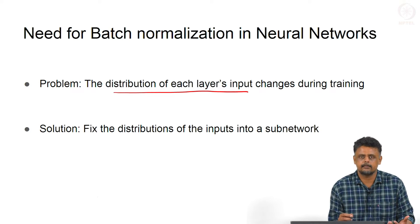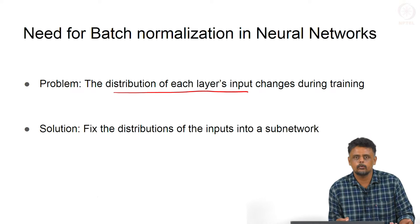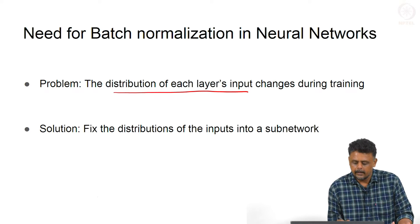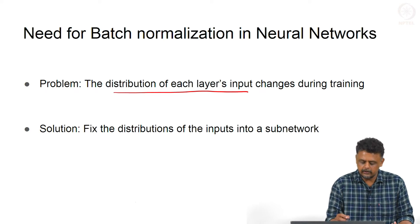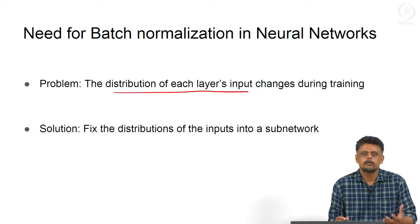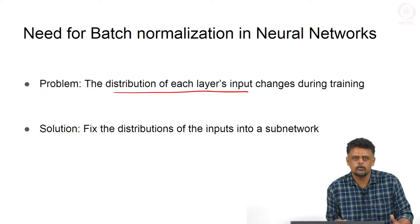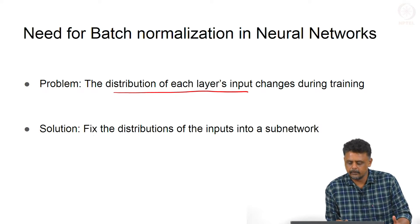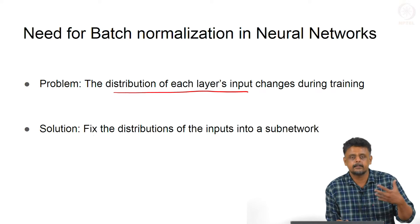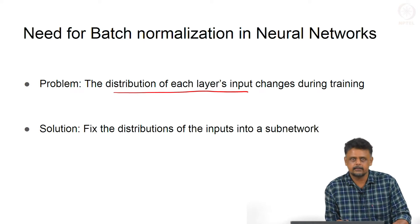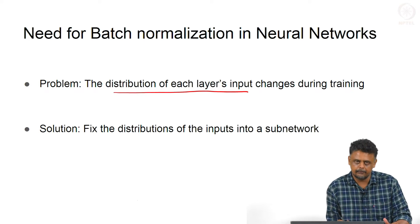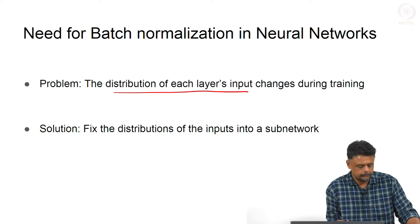Because the weights change drastically between two iterations, you have the same issue. The solution is to somehow make sure that the distributions do not change too much — in the sense that the distribution of the inputs to a layer do not change too much. Let us see what that means and how we can address that problem.